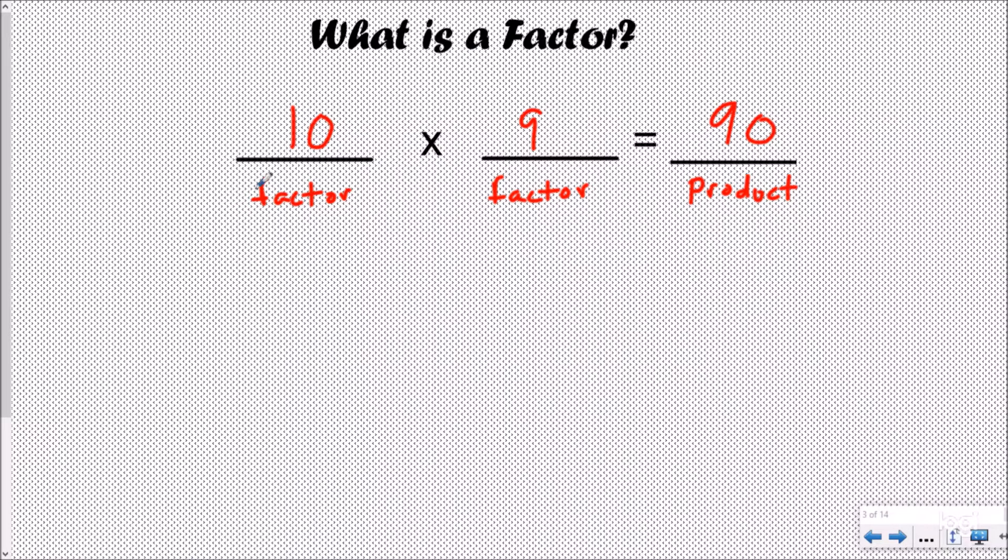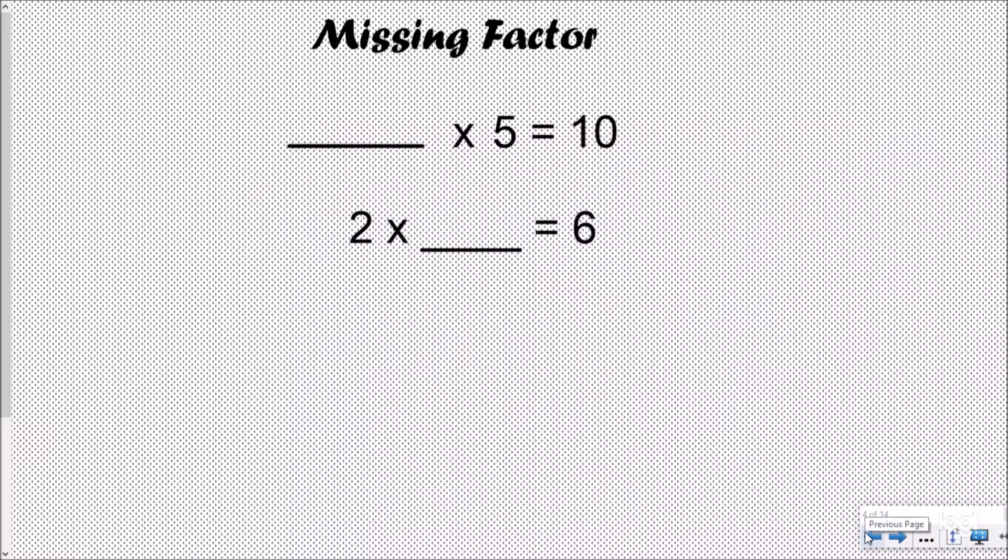A factor of 90 could be 10 and a factor of 90 could be 9. Now that we understand what a factor is, let's think about what is our missing factor. What factor could I multiply by 5 to get 10? Obviously the answer is 2. So the statement you could say is that 2 is a factor of 10 and 5 is a factor of 10.